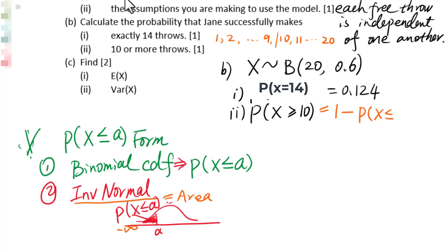Probability of X greater than or equal to 10 is 1 minus probability of X less than or equal to 9.